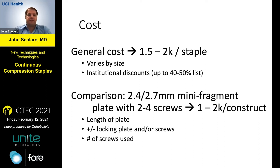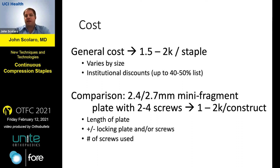Cost is one of the big considerations. At UCI, most of these staples are about $1,500 to $2,000 each, varying a little by size, though we have an institutional discount bringing it to about half the list price. In comparison, a mini fragment plate construct used as a provisional reduction tool runs anywhere between $1,000 to $2,000 per construct — so before you start dismissing the staples, the mini fragment plates aren't cheap either.